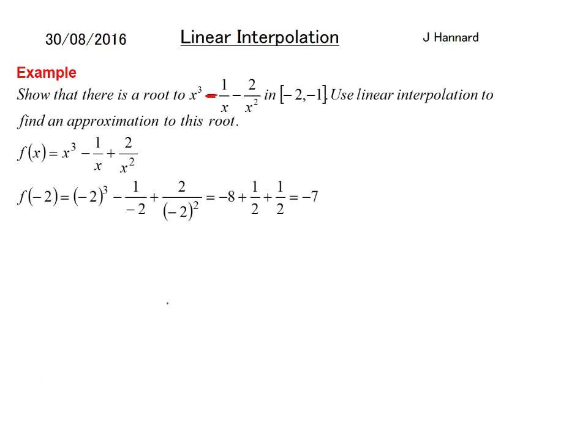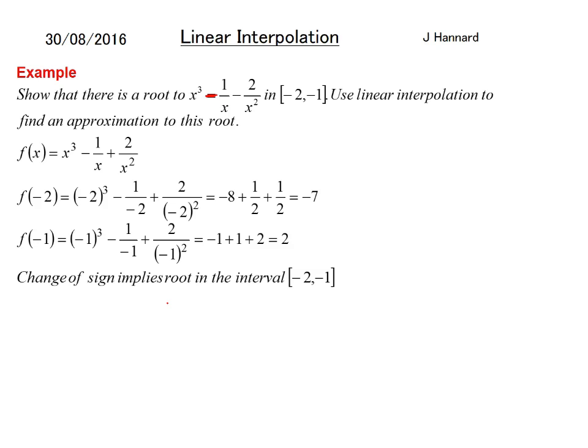Putting -2 in, you get (-2)³ - 1/(-2) + 2/(-2)², which equals -8 + 0.5 + 0.5, which is -7. Putting -1 in, you get 2. To show that there's a root, we're looking for a change of sign - we've got one, which implies there's a root between the interval -2 and -1.